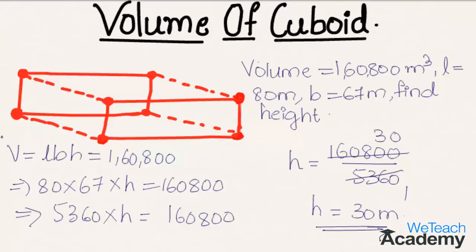We can conclude that volume of a cuboid is given by the formula length into breadth into height cubic units. This was a basic introduction on volume of a cuboid. Hope you understood the concept. Do like and subscribe to vteachacademy.com. Thanks for watching. Have a nice day.